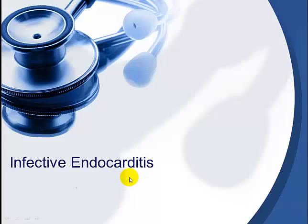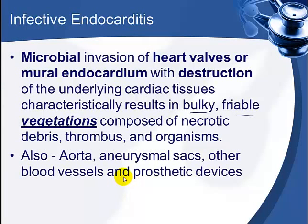Infective endocarditis, as the name suggests, means inflammation of the innermost layer of the heart, which is called the endocardium. 'Infective' means it is caused by some kind of microorganism. When infective organisms affect the innermost layer of the heart — the endocardium — it is called infective endocarditis. What really happens is that there is invasion of these microbial agents, and they invade the heart walls or the mural endocardium, causing a lot of destruction.